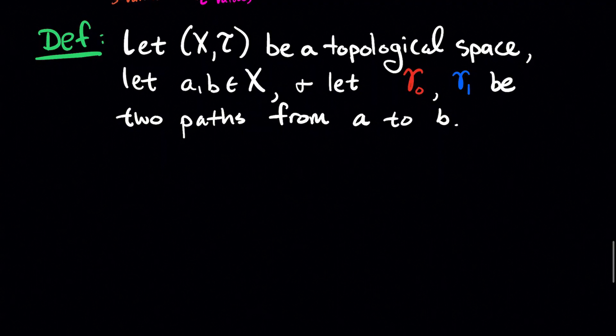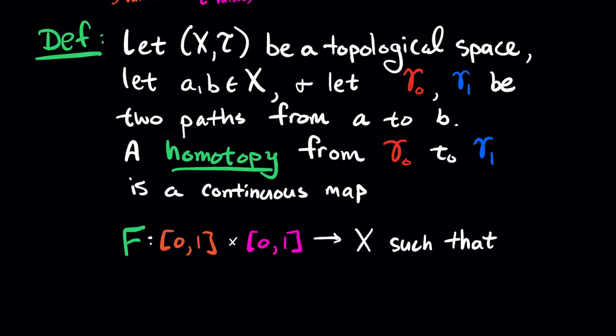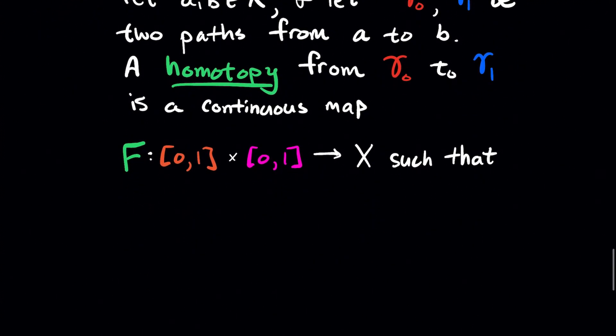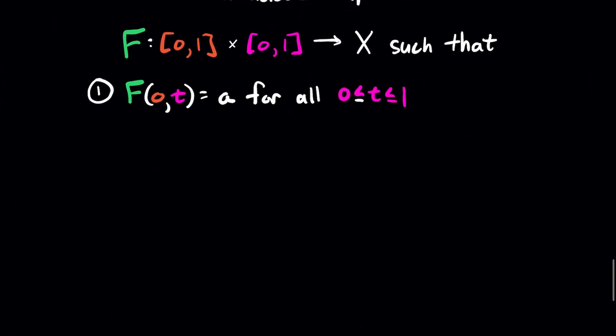So let (X,T) be our topological space, pick two points A,B in the space, and let gamma 0 and gamma 1 be two paths from A to B. A homotopy from gamma 0 to gamma 1 is a continuous map F, who takes inputs from the unit interval across itself to our topological space where it outputs, such that the following things are satisfied: F of (0,T) is A for all values of T from 0 to 1. F of (1,T) is B for all values of T between 0 and 1.